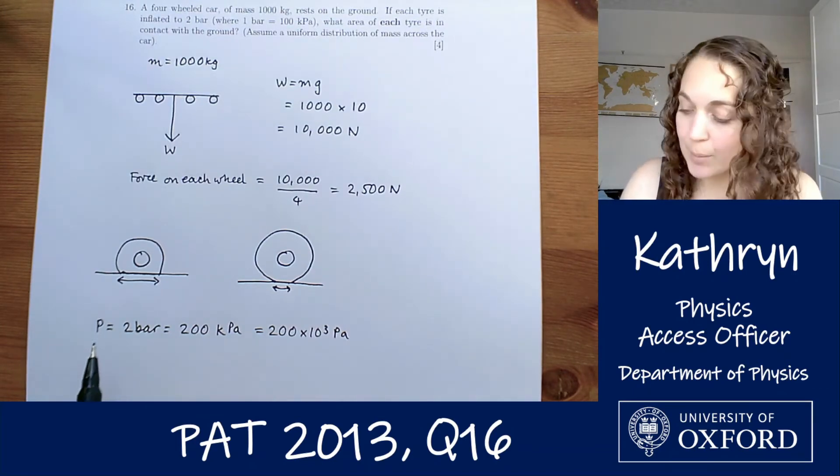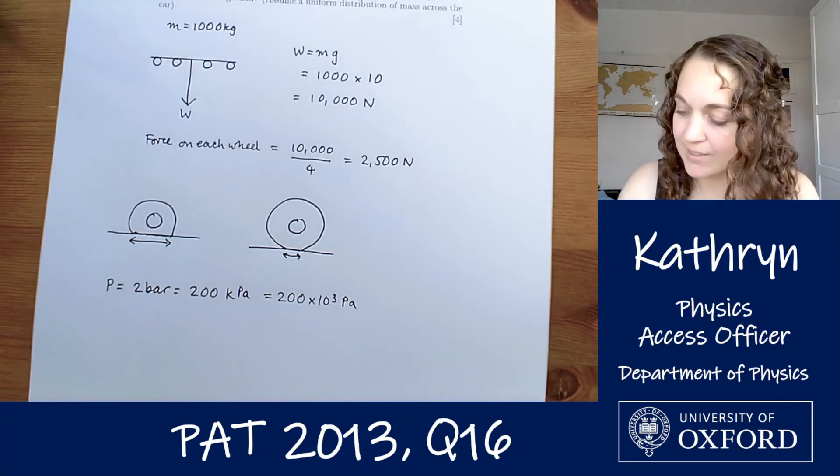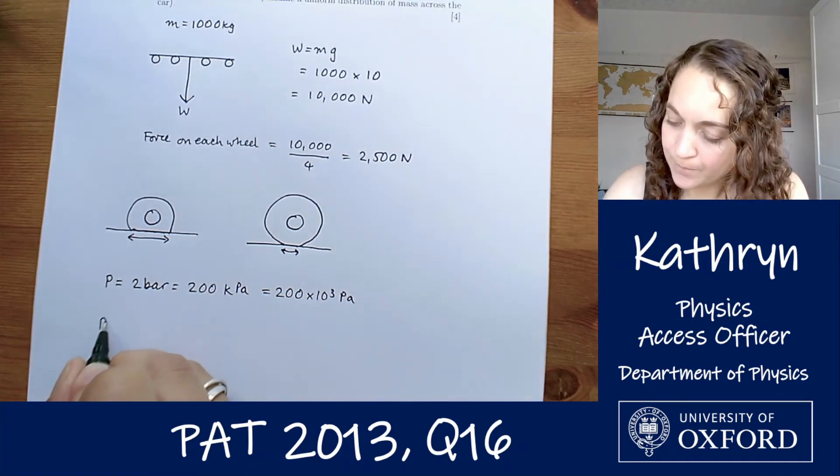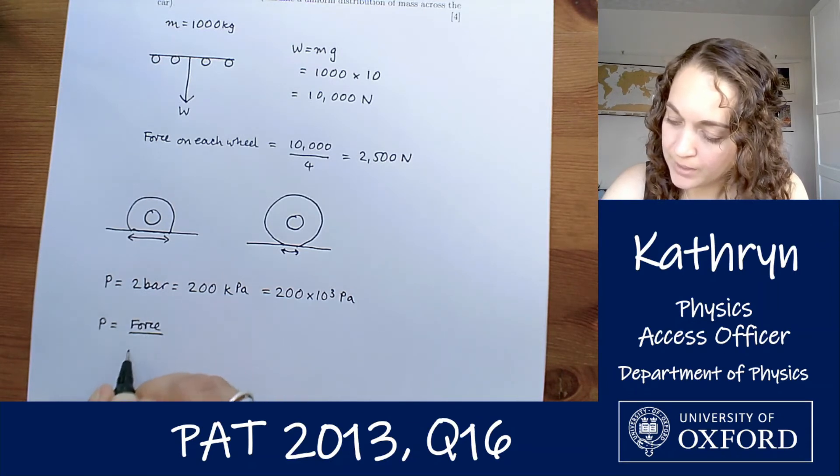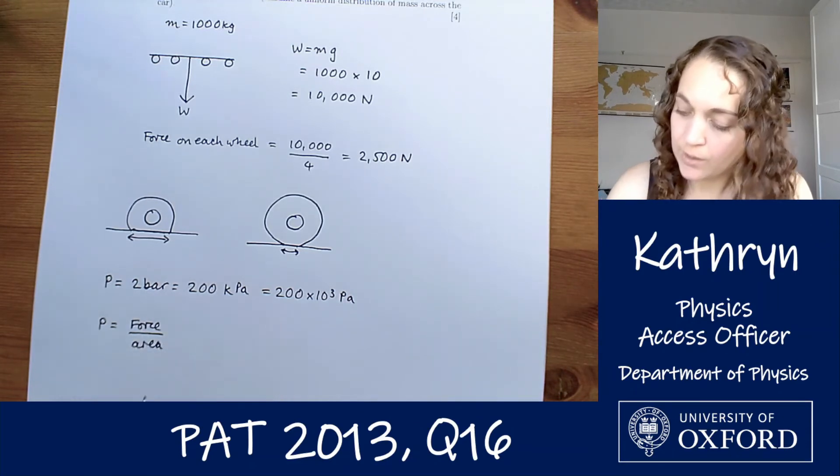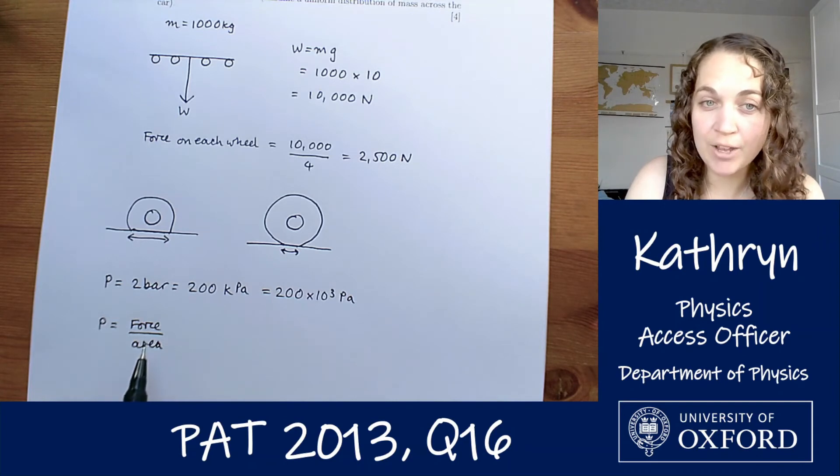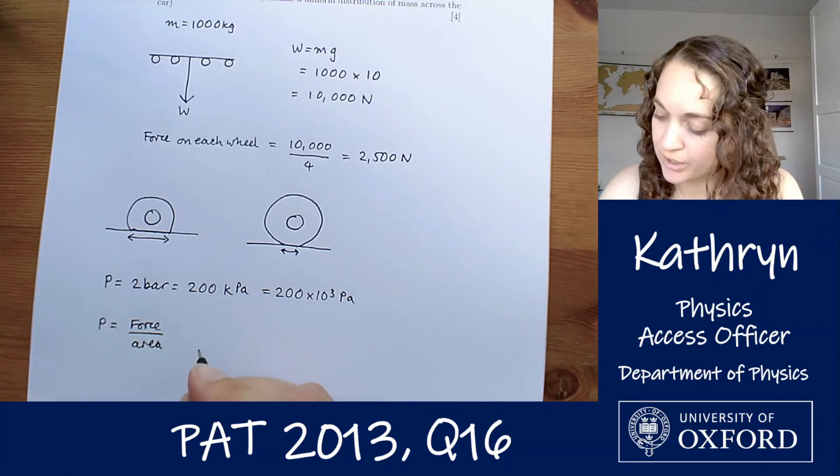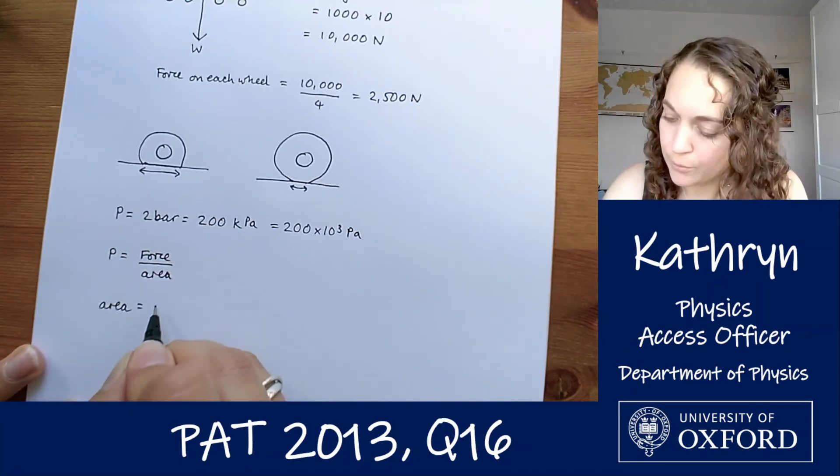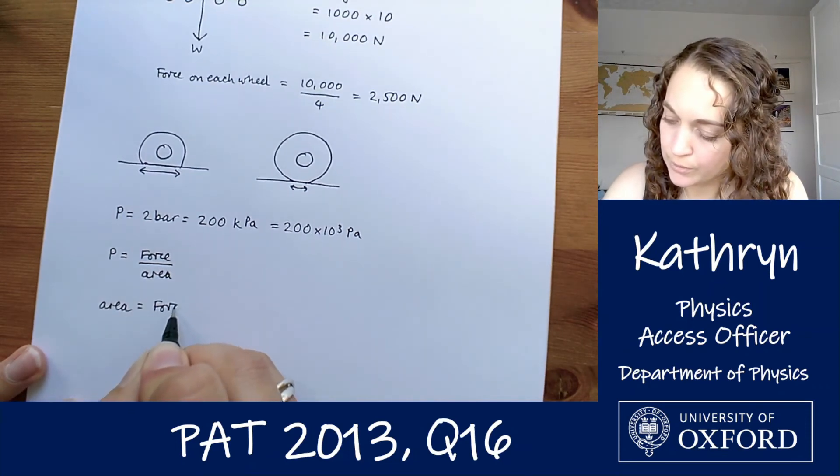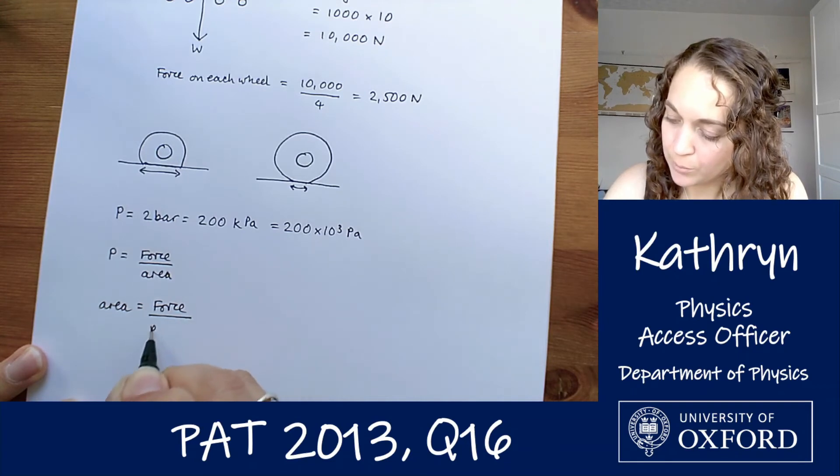If we're thinking about pressure, force and area, there's a formula that connects those three. Pressure is force divided by area. So if we want to know the area, we need to do force divided by pressure. So area equals force divided by pressure.